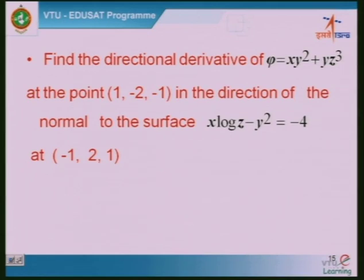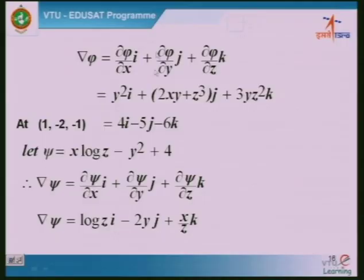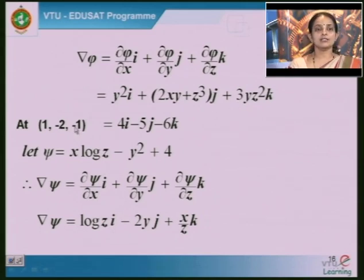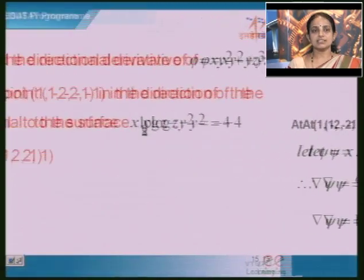For the given function φ, find grad φ = y²i + 2xyz³j + ... evaluated at the point (1, −2, −1), giving grad φ = 4i − 5j − 6k. We have completed the first part — grad φ is found. Now address the second part: in the direction of the normal to the surface. The normal to a surface is given by grad of that surface function.